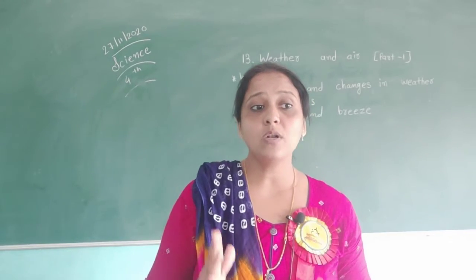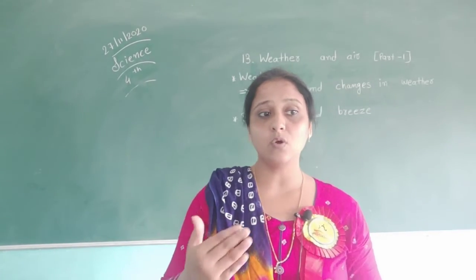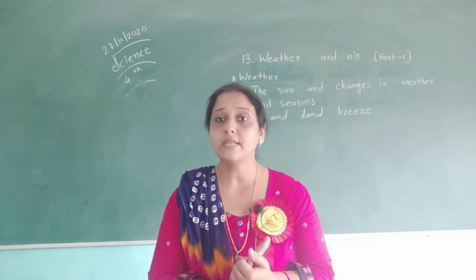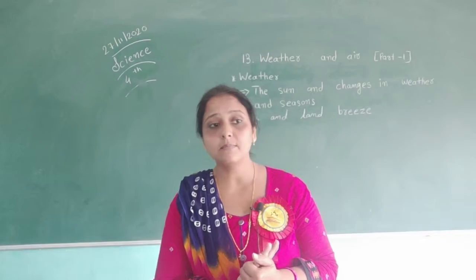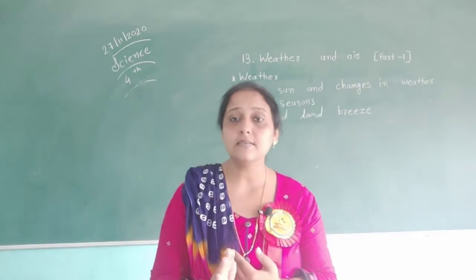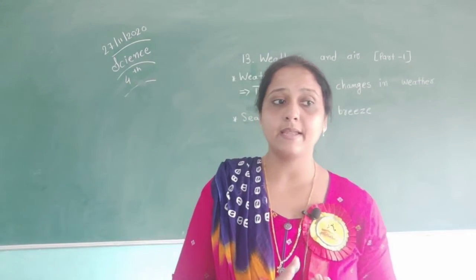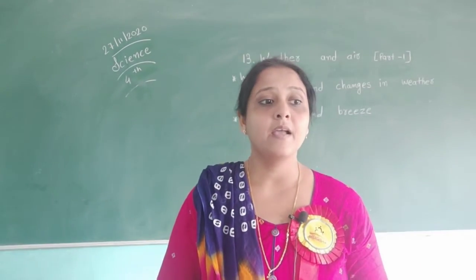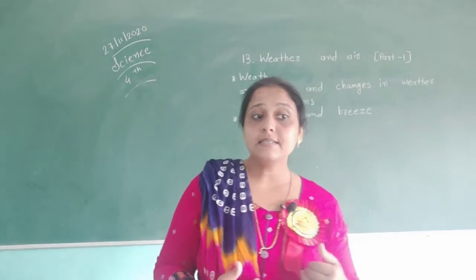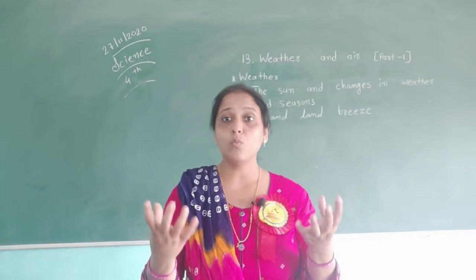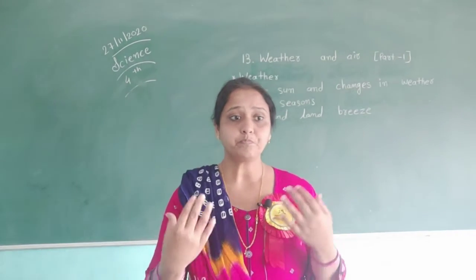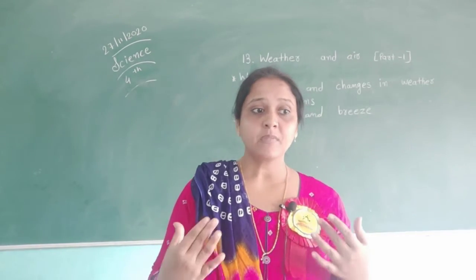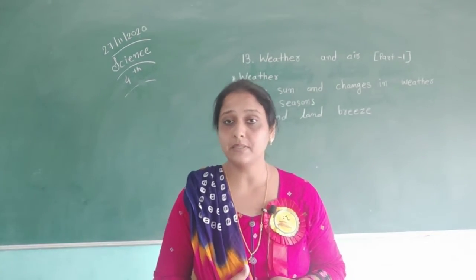At a given time, only one half of the earth is facing the sun. The earth is slightly tilted on its axis, so a part of the earth is near the sun while the other part is slightly away. The part which is near the sun receives more sunlight, so it has longer and warmer days — it is summer in that part.